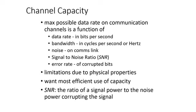The maximum rate at which data can be transmitted over a given communications channel under given conditions is referred to as the channel capacity. It depends on data rate, bandwidth, average level of noise, signal-to-noise ratio, and error rate. The signal-to-noise ratio, or SNR, is the ratio of signal power to noise power corrupting the signal. All transmission channels have limited bandwidth due to the physical properties of the medium or deliberate limitations to prevent interference. We want to make as efficient use as possible of a given bandwidth, meaning for digital data we want as high a data rate as possible at a particular error rate limit.